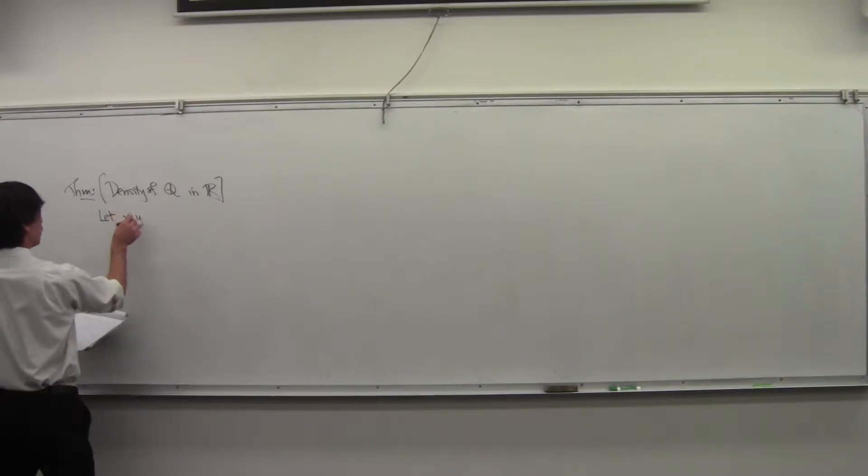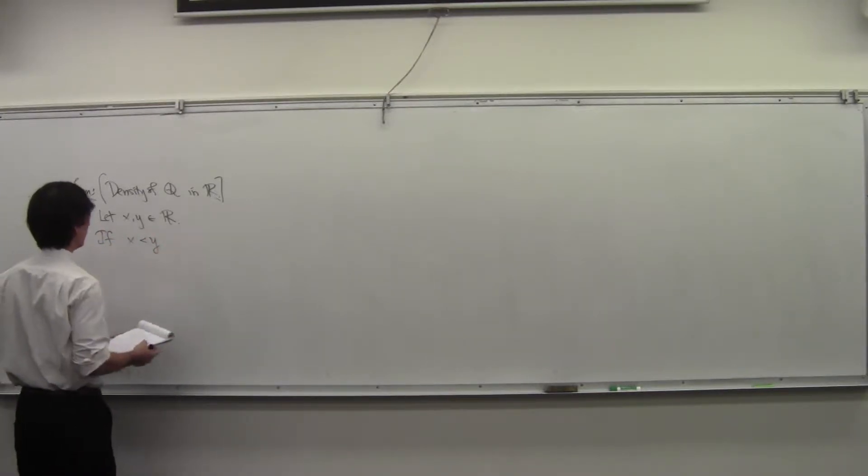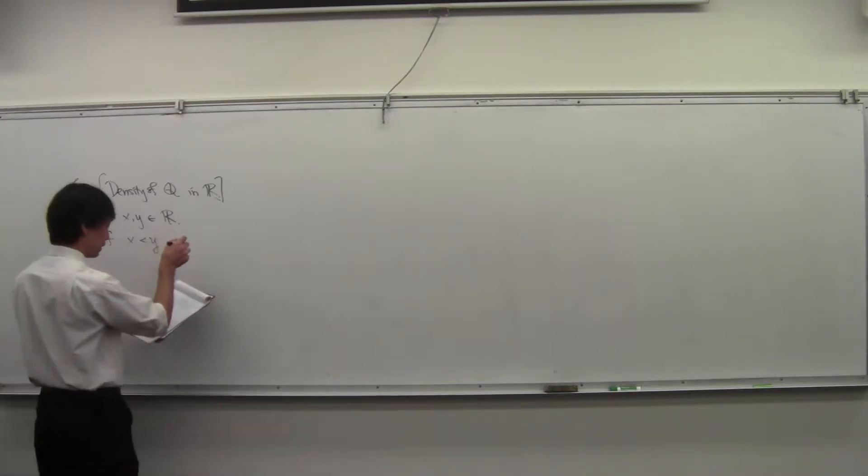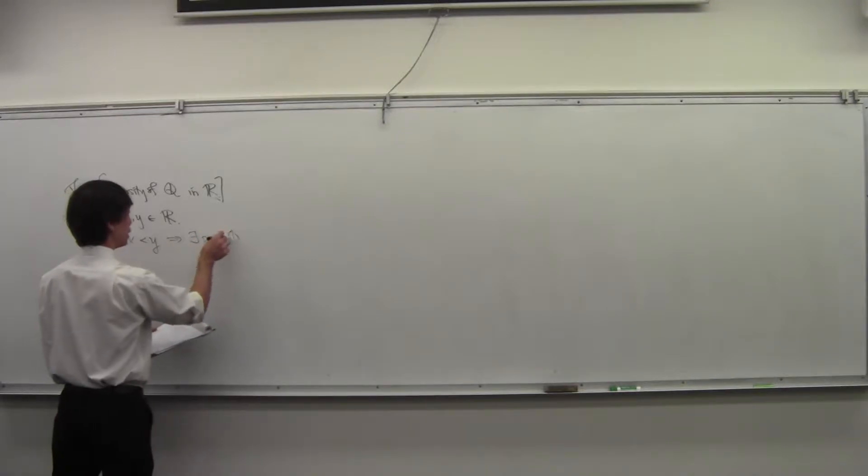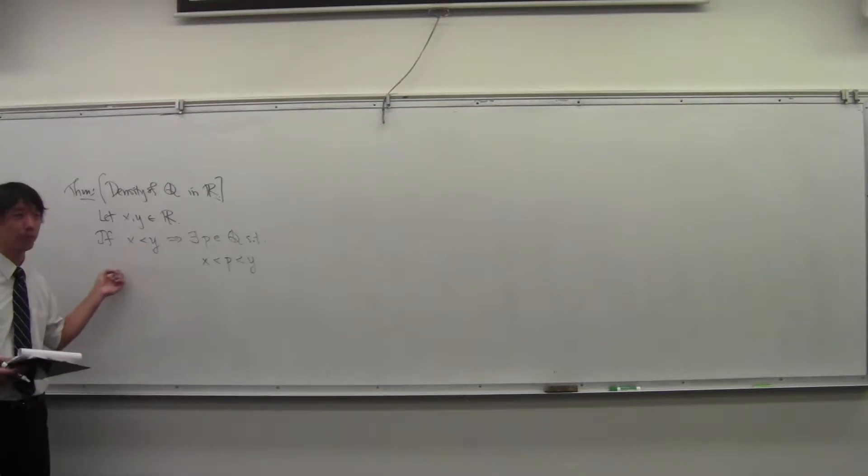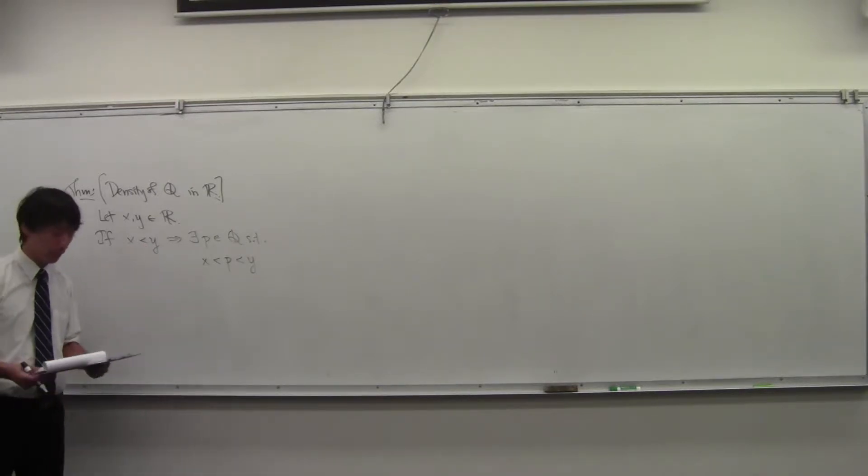So here's the statement: let X and Y be real numbers where X is less than Y. Then there exists some rational number P such that P is trapped between X and Y. So given any pair of different real numbers, there's always a rational number between them.